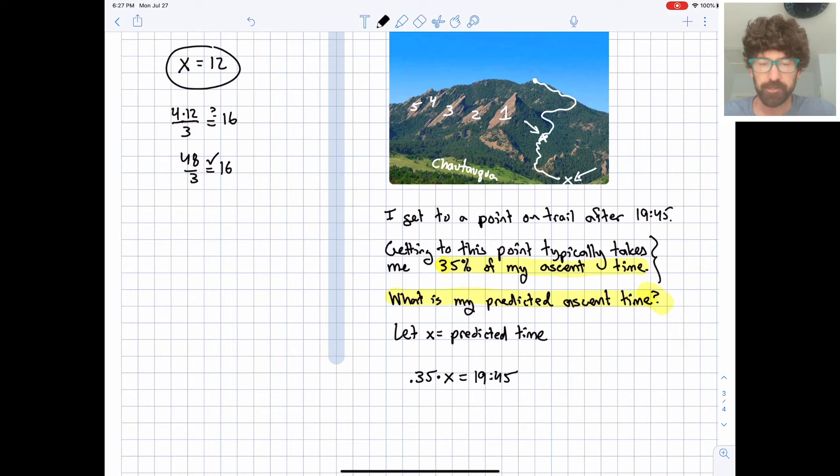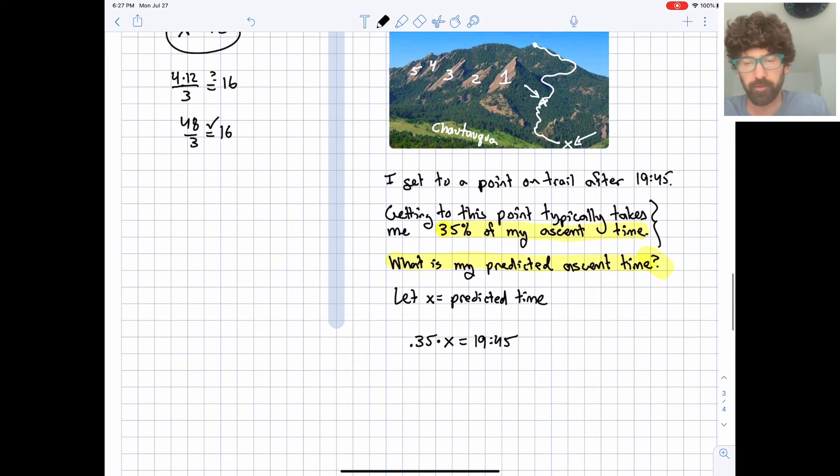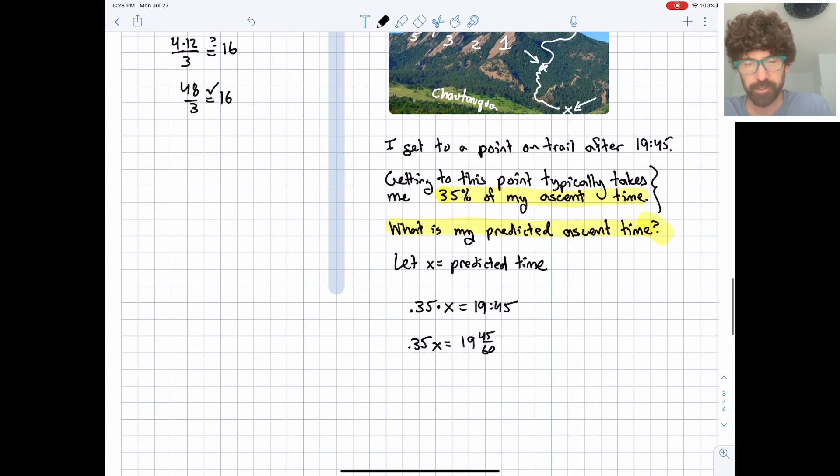So a common mistake at this point is to consider this as 19.45. But 45 seconds is out of 60, and the .45 is out of, or those are hundredths out of a full single unit. So let's figure out what that might be here, and that's 19 and 45 sixtieths, which I think you can probably see, or maybe use a calculator, is 19.75.